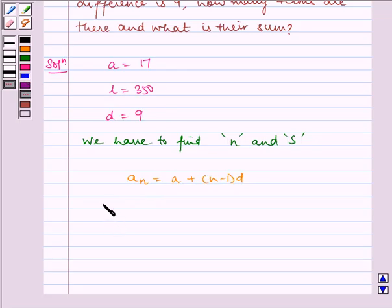So, substituting the values, it implies 350 is equal to 17 plus N minus 1 multiplied by 9, which implies 350 is equal to 17 plus 9N minus 9.